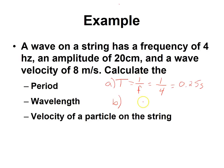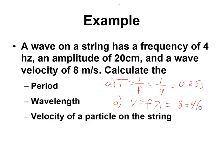For part b, we want to find the wavelength. The key equation is v = f × λ, where λ is the symbol for wavelength. Our frequency is 4 hertz and our velocity is given as 8, so: 8 = 4 × λ. Therefore our wavelength is 2 meters.